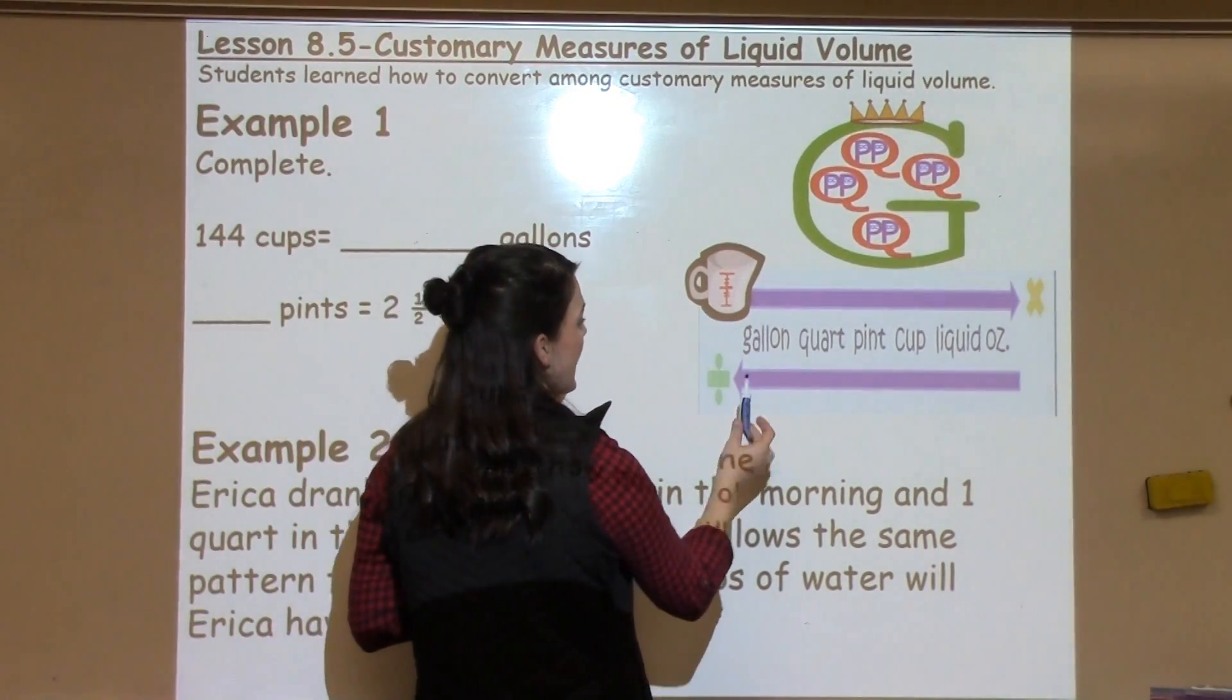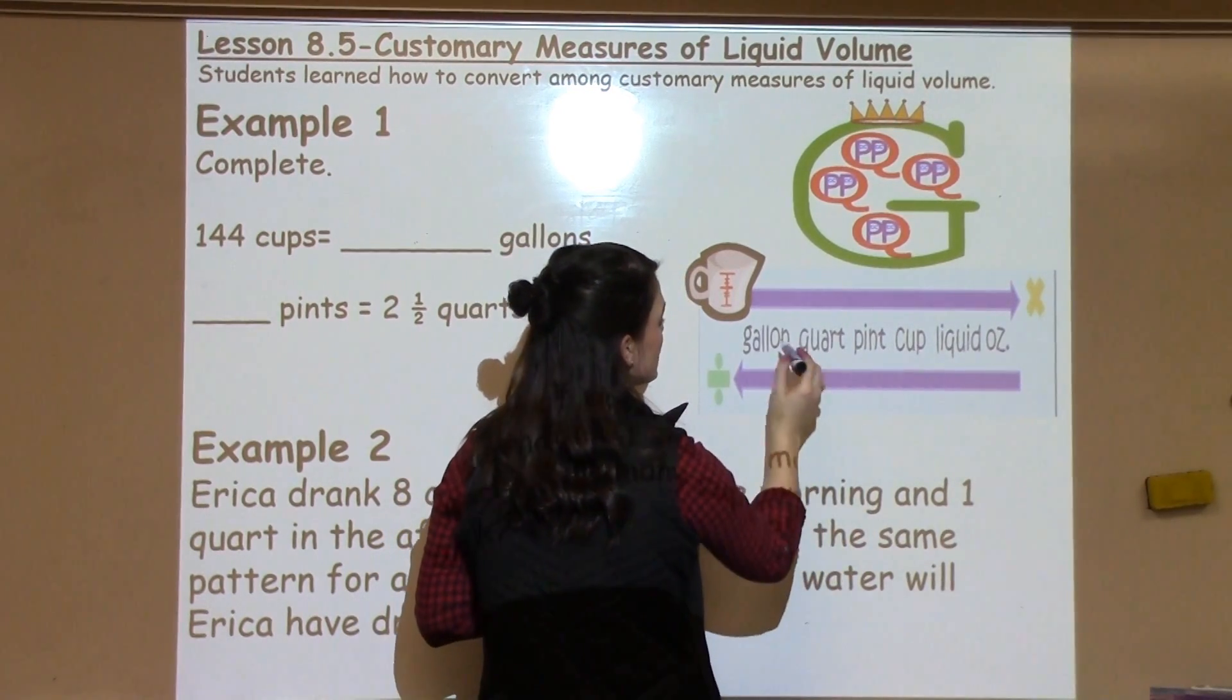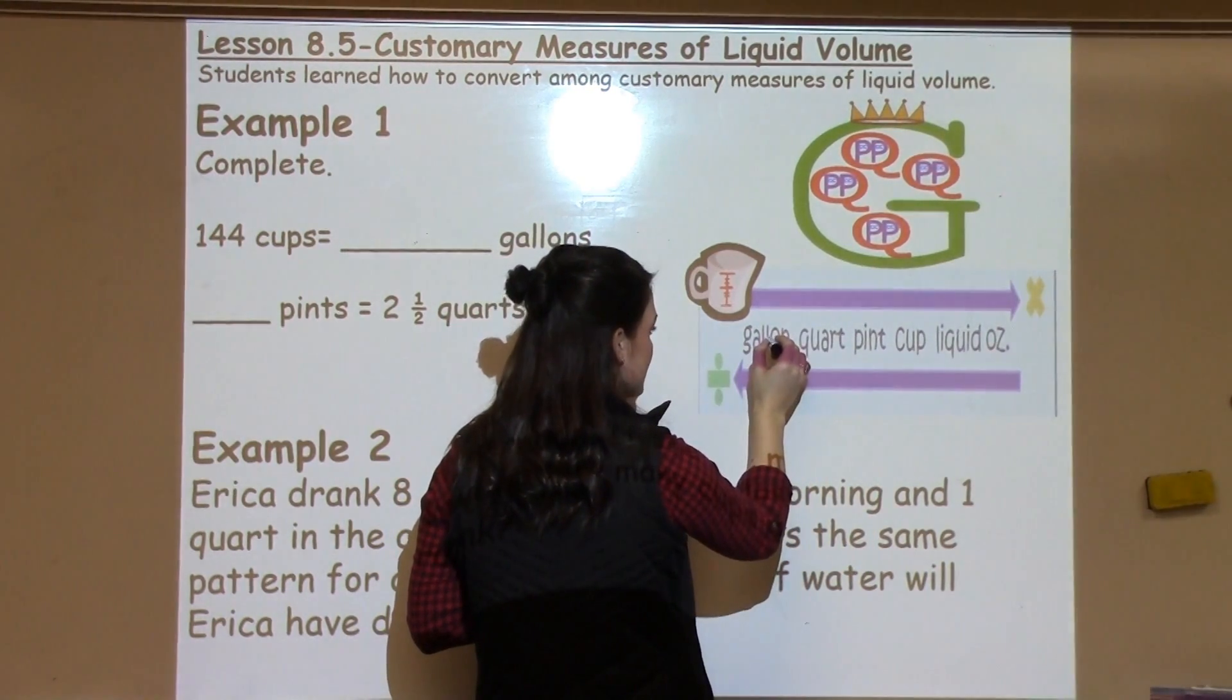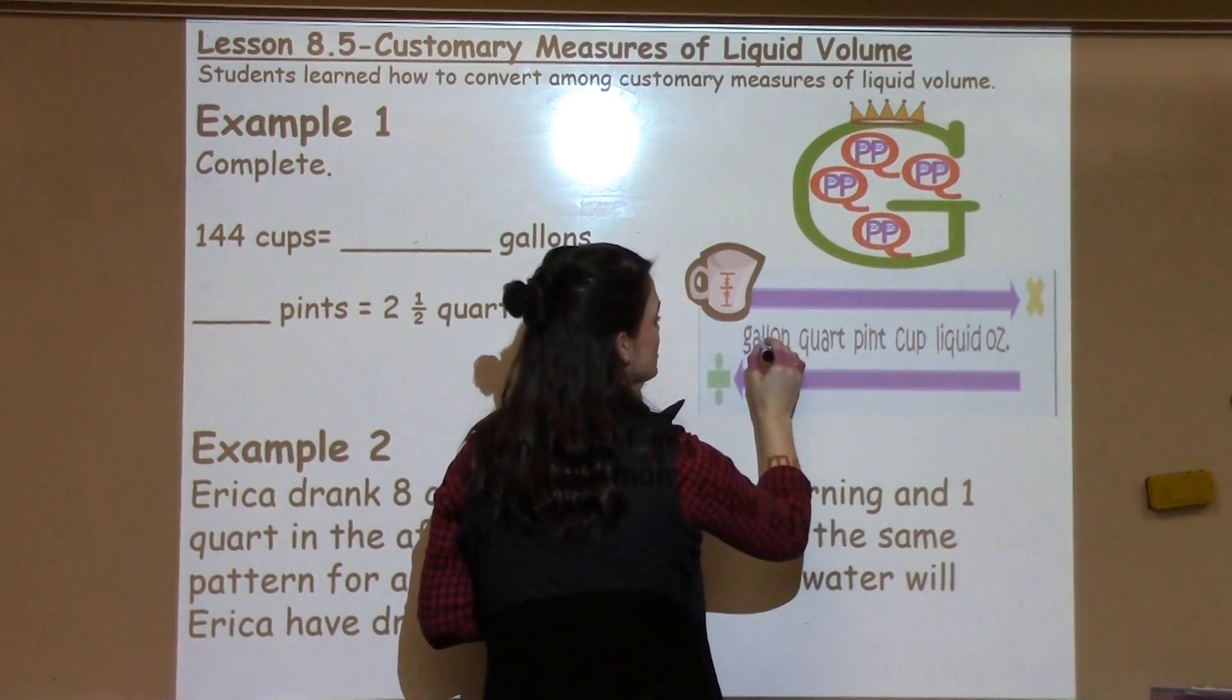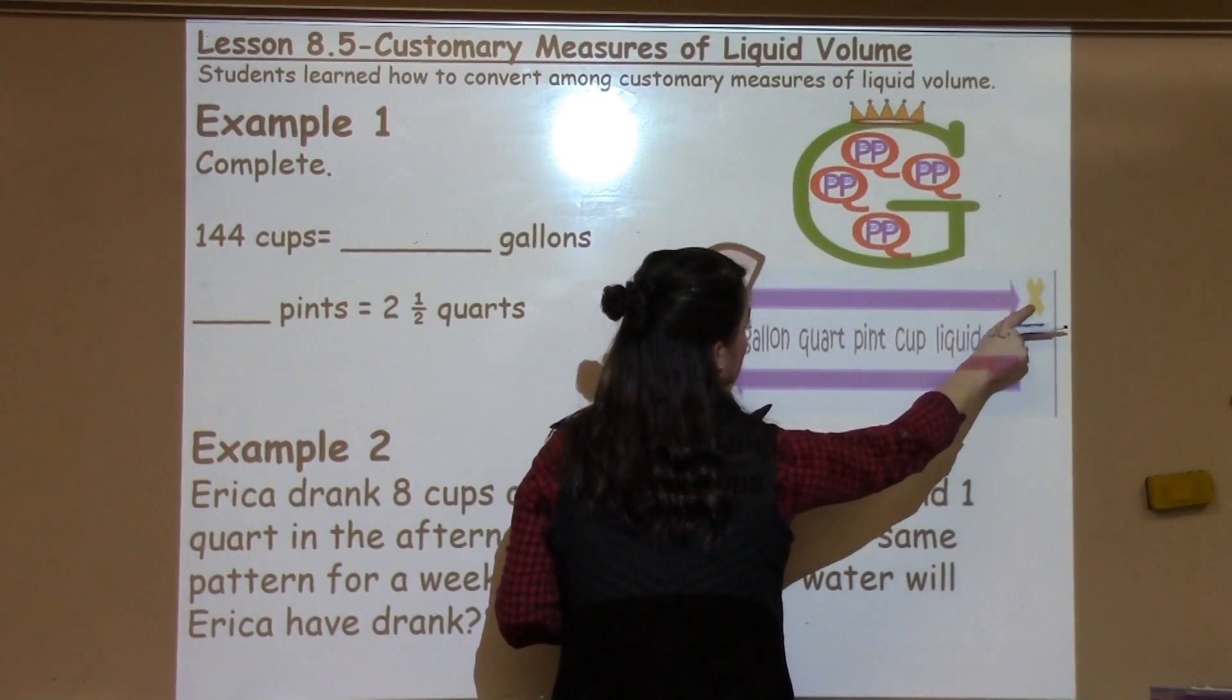So, for instance, if I had a measure for gallons and I wanted to find out how many cups, we encourage your student to put their finger on what they have a number for, move to what they want, and whichever direction they're moving helps them know which symbol to use.